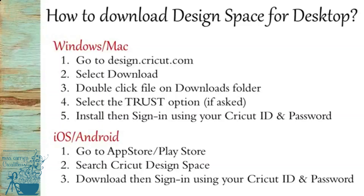How do you download Design Space for Desktop? If you go to the web-based version, it will automatically advise you to download it. Or you can go to design.cricut.com, select download, double-click on the file in your downloads folder once it's downloaded, select the trust option if asked, install it, and sign in using your regular Cricut ID and password. For iOS or Android, go to the App Store or Play Store, search Cricut Design Space, download, and sign in. You don't need to change your ID — all of your old projects, images, and everything will still be there.